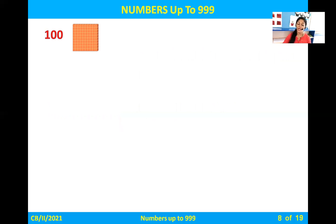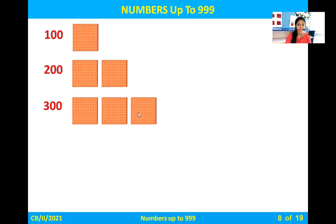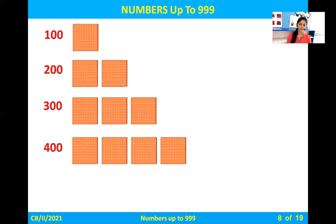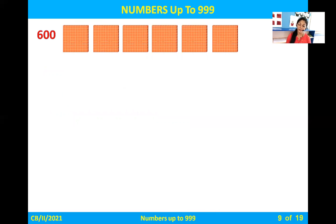They will be showing you the hundreds block and you have to count it. The first one you can see is one block — so it is one hundred. Here you can see two hundreds blocks — so it is two hundred. Three hundreds block is three hundred. Four hundreds block is four hundred. Five hundreds block: one hundred, two hundred, three hundred, four hundred, five hundred. Six hundreds block is six hundred.